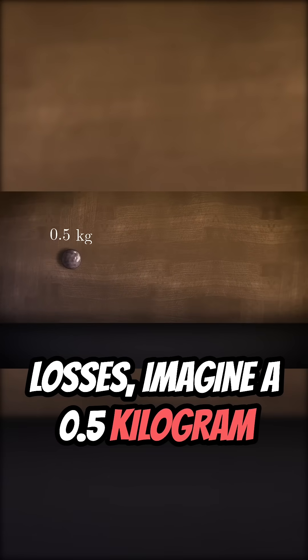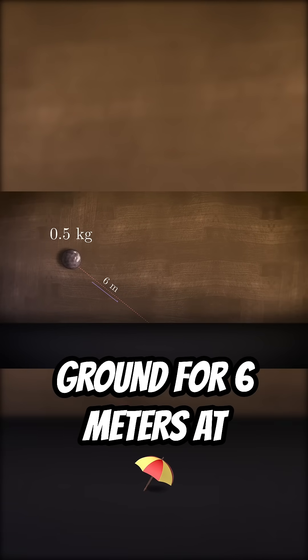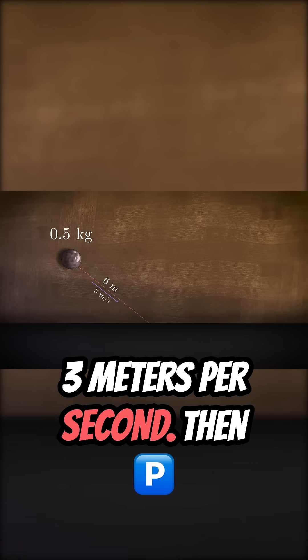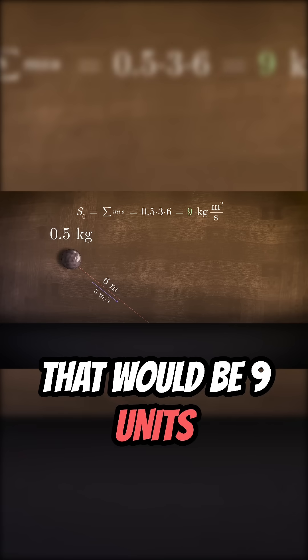Imagine a 0.5 kilogram ball is rolled over the ground for 6 meters at 3 meters per second. Then that would be 9 units of action.